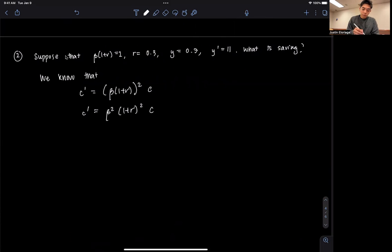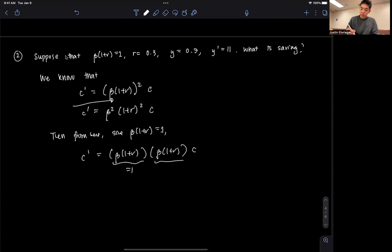Then from here, since beta times 1 plus r is equal to 1, notice we can rewrite it as beta times 1 plus r, and that will be squared because I multiply the two of them times C. But this is equal to 1, this is also equal to 1, therefore, C prime is equal to C.